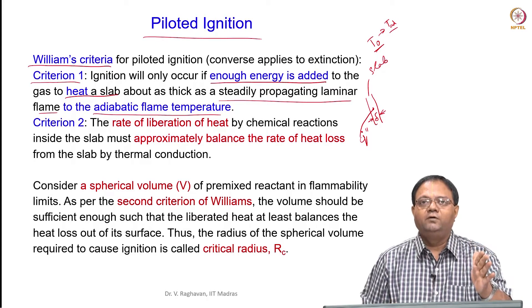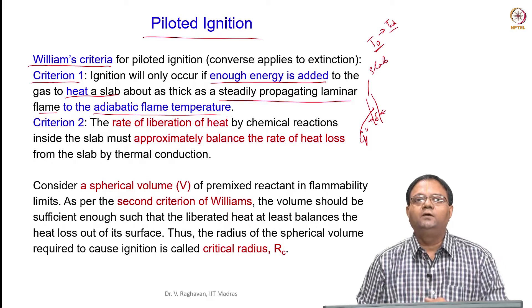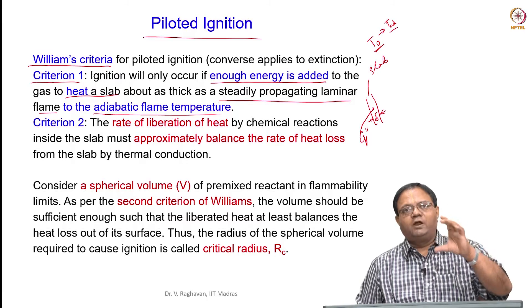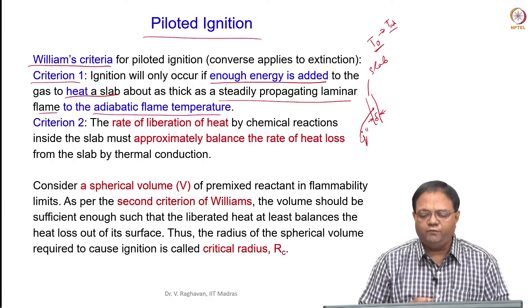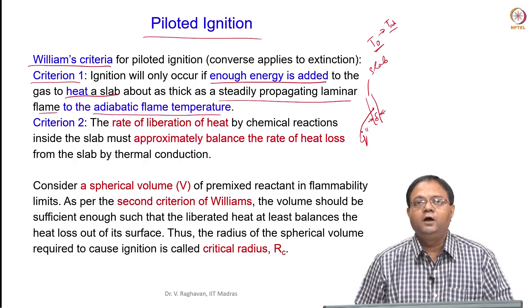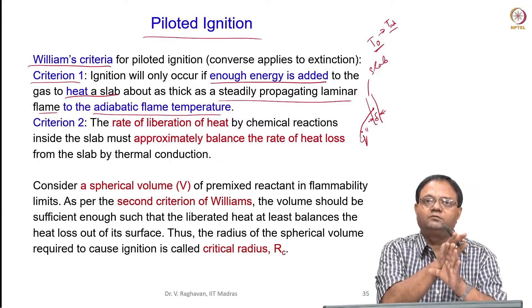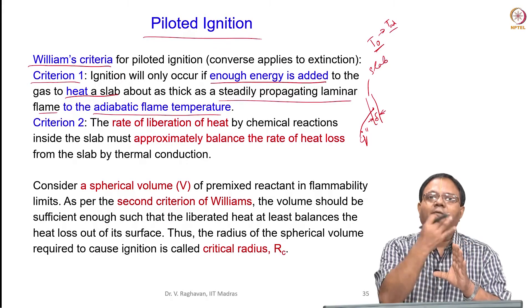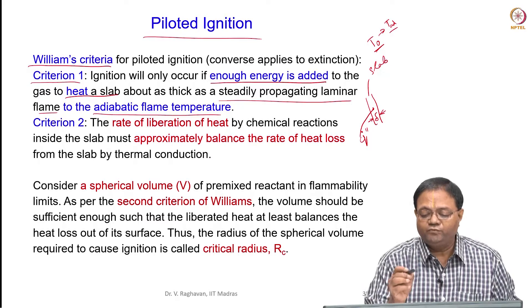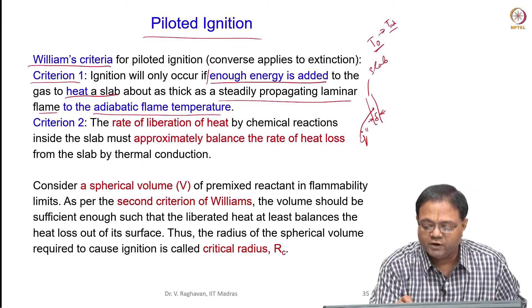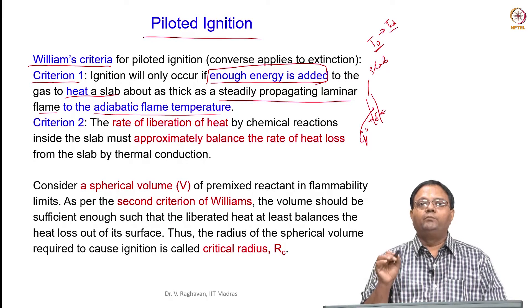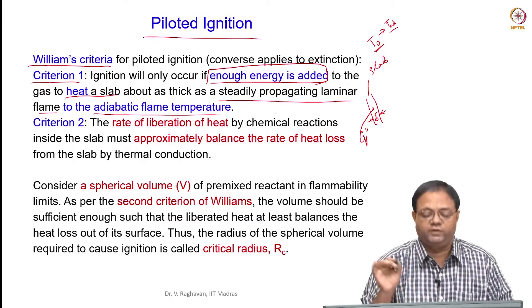That means you are forming a flame which is going to consume the rest. You have a localized region where the flame is formed first. The flame has a typical thickness of a laminar premixed flame, delta. If you can heat up this region to adiabatic flame temperature, you accomplish ignition there. For that, you need to add enough energy — that is one of the criteria. What is the minimum energy we need to add?